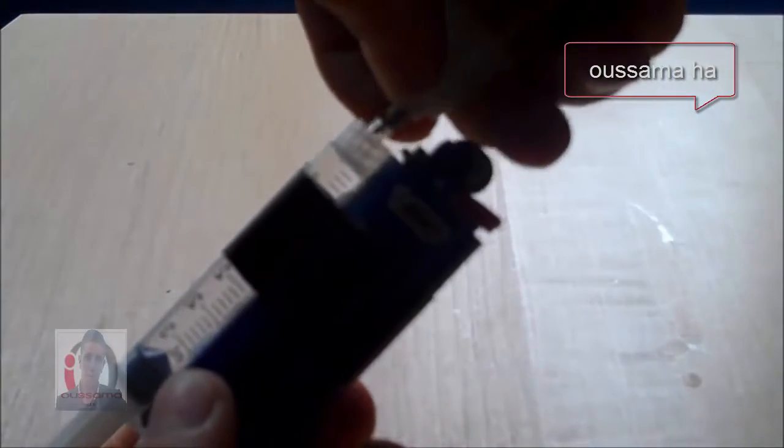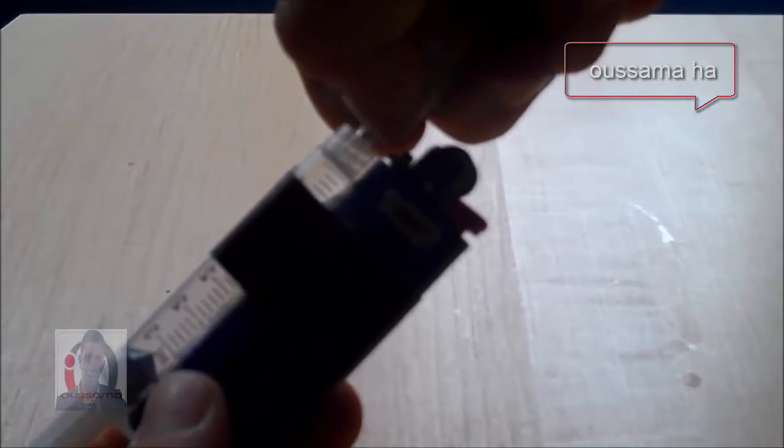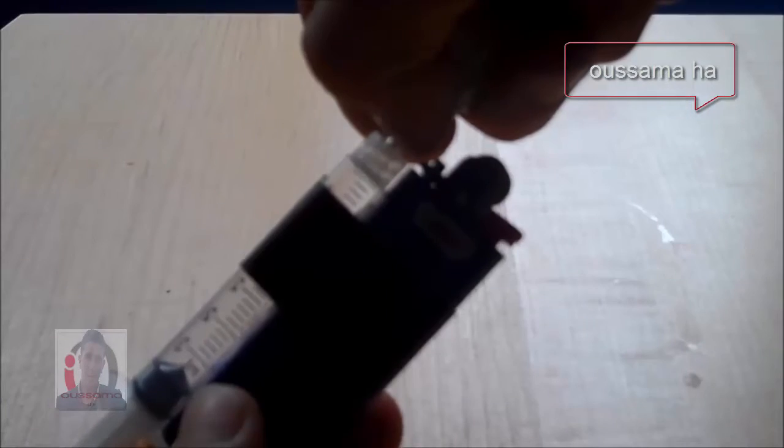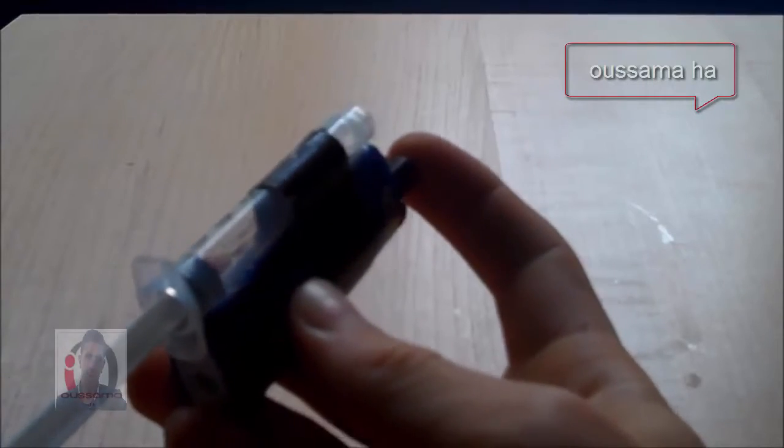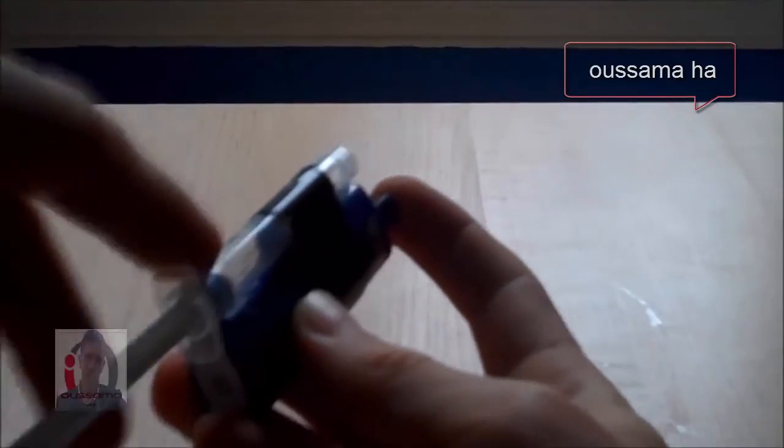Tip it upside down since the butane is heavier than air. About five seconds. Three, four, five. Now before it all runs out, light the lighter and press the plunger.